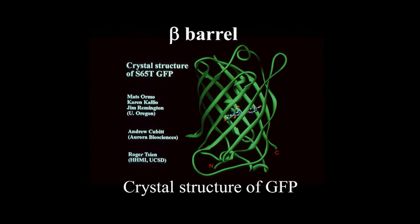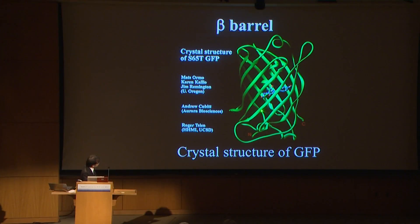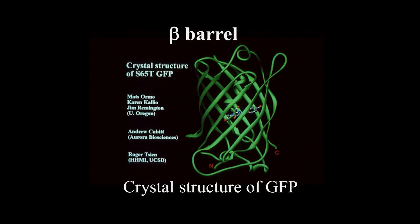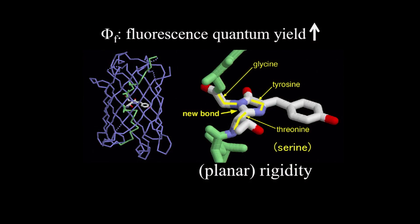This is the crystal structure of GFP — the beta-barrel structure. It has an 11-stranded beta-barrel with one alpha-helix inside. The chromophore is formed on the helix, and the barrel is very robust. The chromophore is packed inside and takes a very rigid structure. That explains why GFP's fluorescence quantum yield is very high.